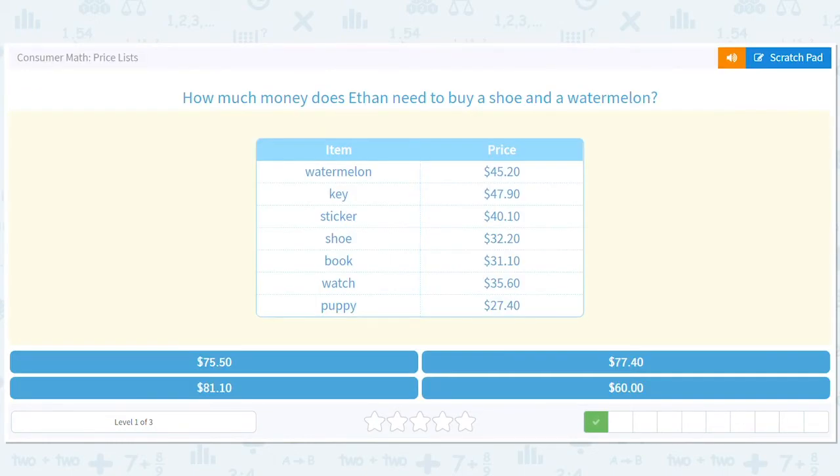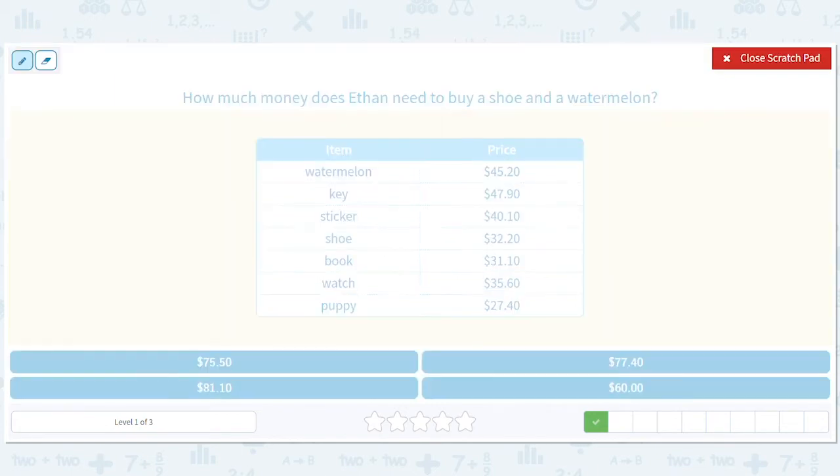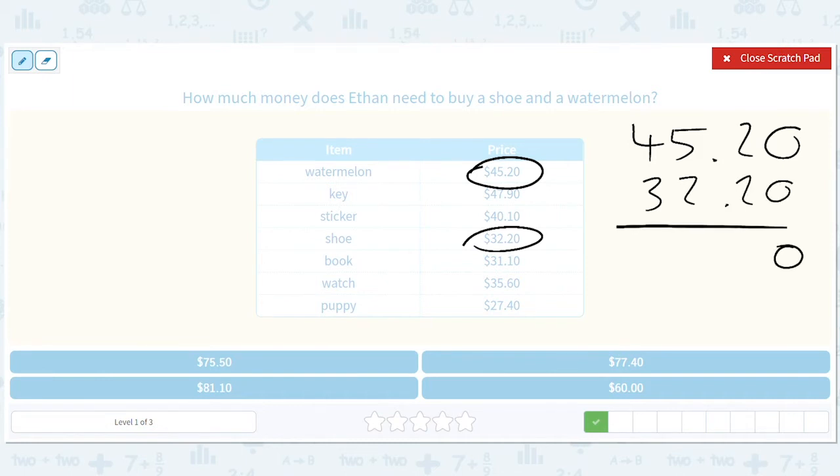How much money does Ethan need to buy a shoe and a watermelon? Ethan's not going to step on this watermelon, his intentions seem a little bit weird, weird combination of purchases. $45.20, $32.20. We're going to get a zero here, we're going to get a four here, we're going to get a seven here, we're going to get a seven here. So watermelon and a shoe will be $77.40.